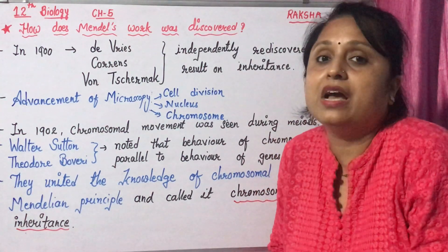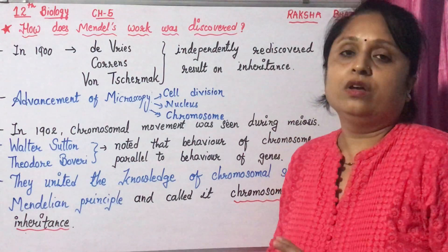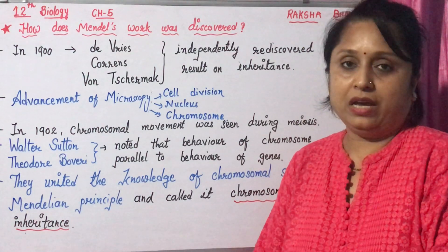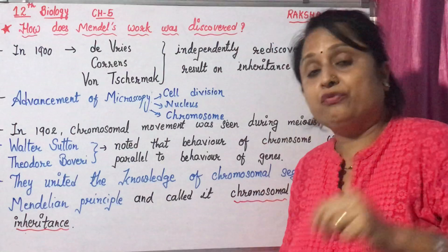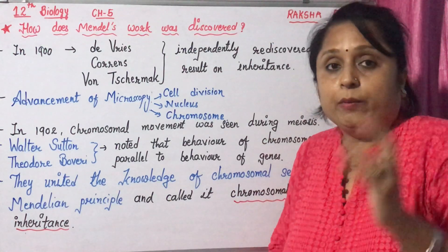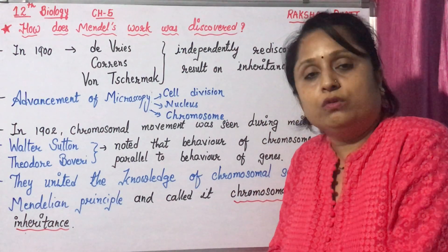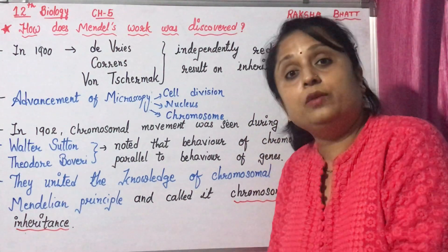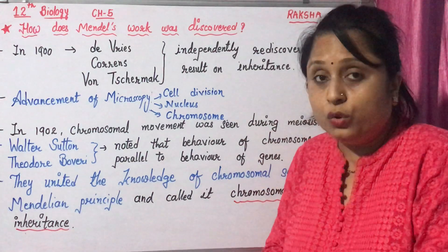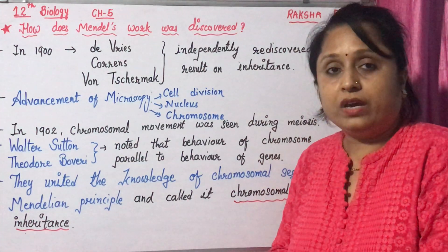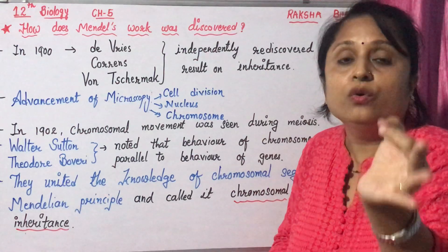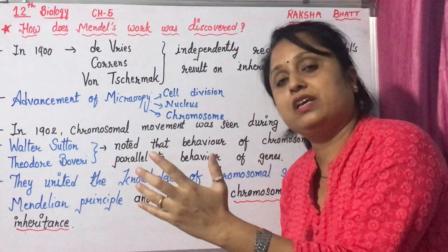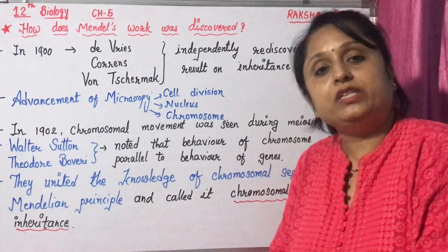Mendel's work was not recognized — why was it not published? There were different reasons. At that time, communication was very difficult, so the concept of the gene that Mendel gave was not accepted by other countries. Mendel used a statistical method which was totally new. And Mendel failed to give experimental proof regarding genes.